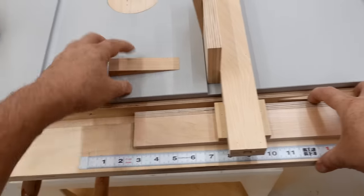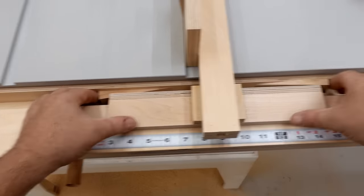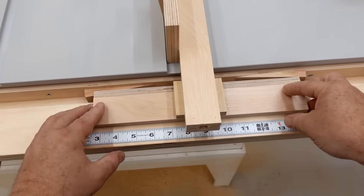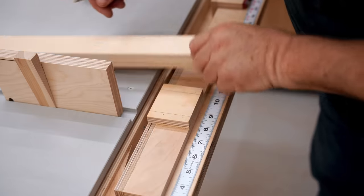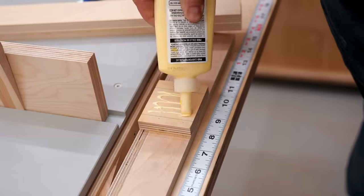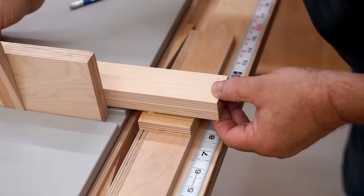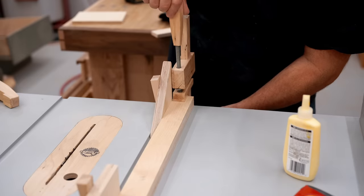You need to locate the fence base an eighth of an inch from the back of the saw and also an eighth of an inch from the front of the fence rail, and that's the reason why it's a quarter inch shorter. I'm going to get this clamped down on the back and the front and leave it to dry for at least an hour.